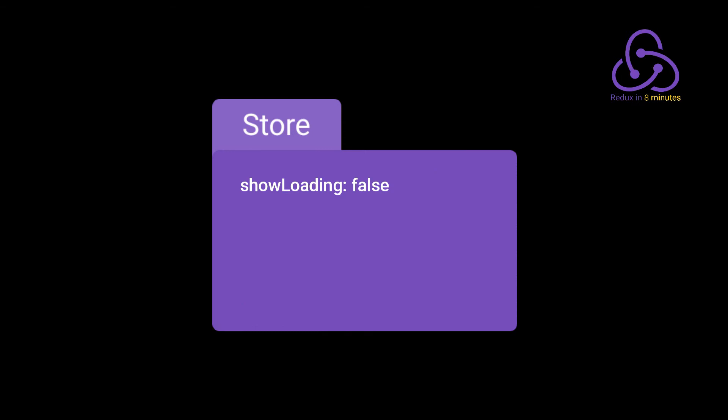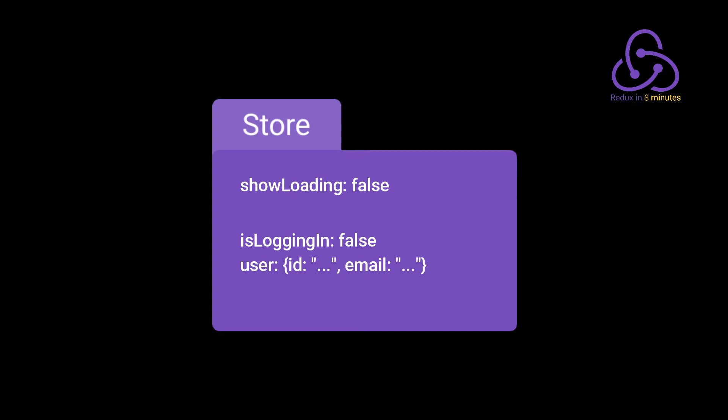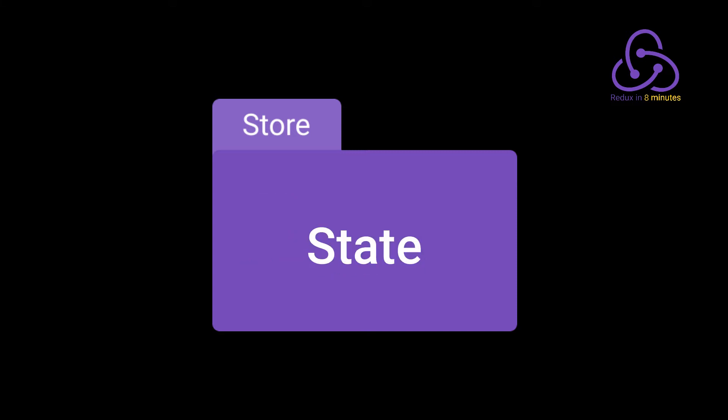One of these elements can inform us if the app should be showing or not the loading component. Another one could inform us if the user is trying to log in, or if the user tried to log in but there was an error, or if the user logged in successfully. These elements are the state of the application.